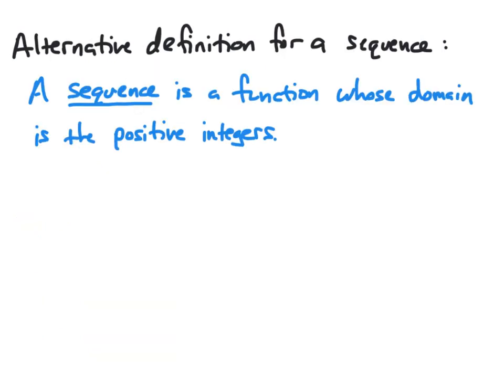We originally defined a sequence to be an ordered list of numbers. And for most situations, that will be an appropriate way of thinking of a sequence in order to work with them. However, there are occasions when we need to think of a sequence in a more functional nature. And so here we provide an alternative definition for a sequence, where we say a sequence is a function whose domain is the set of positive integers.